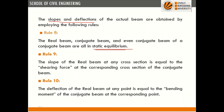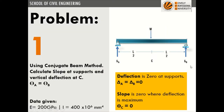We will now solve a basic numerical: a simply supported beam with a central point load W. Using the conjugate beam method, we calculate slope at supports A and B and vertical deflection at C. From symmetry, θA = θB. The beam deflects under the load, with maximum deflection under the point load where slope is zero.